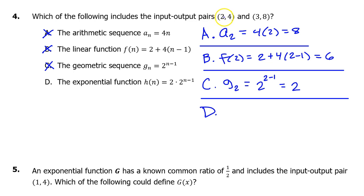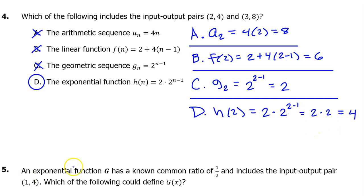Let's evaluate option D at 2 and see if we get 4. So we will have H(2), and that will equal 2 times 2 to the (2 minus 1) power. But this is really 2 times 2 to the 1 power, which does equal 4. At this point, we already know that D is the answer. But let's follow through and evaluate at 3 and see if we get 8. So let's check H(3). This will equal 2 times 2 to the (3 minus 1) power, which will be 2 times 2 to the 2nd power, which is 2 times 4, which is 8.